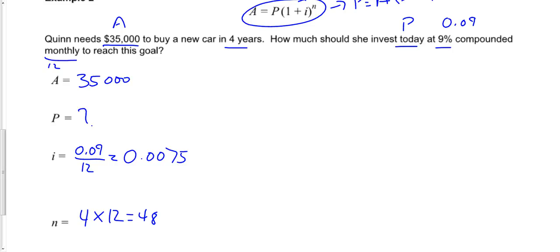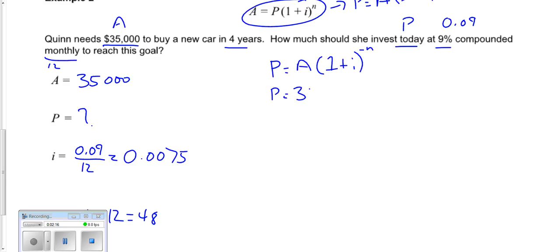So what I need to do now is I need to put in my equation. So when I put in my equation, I'm looking for the present value. So P is equal to A times 1 plus I to the exponent negative N. So P is equal to 35,000 times 1 plus 0.0075 to the exponent negative 48.